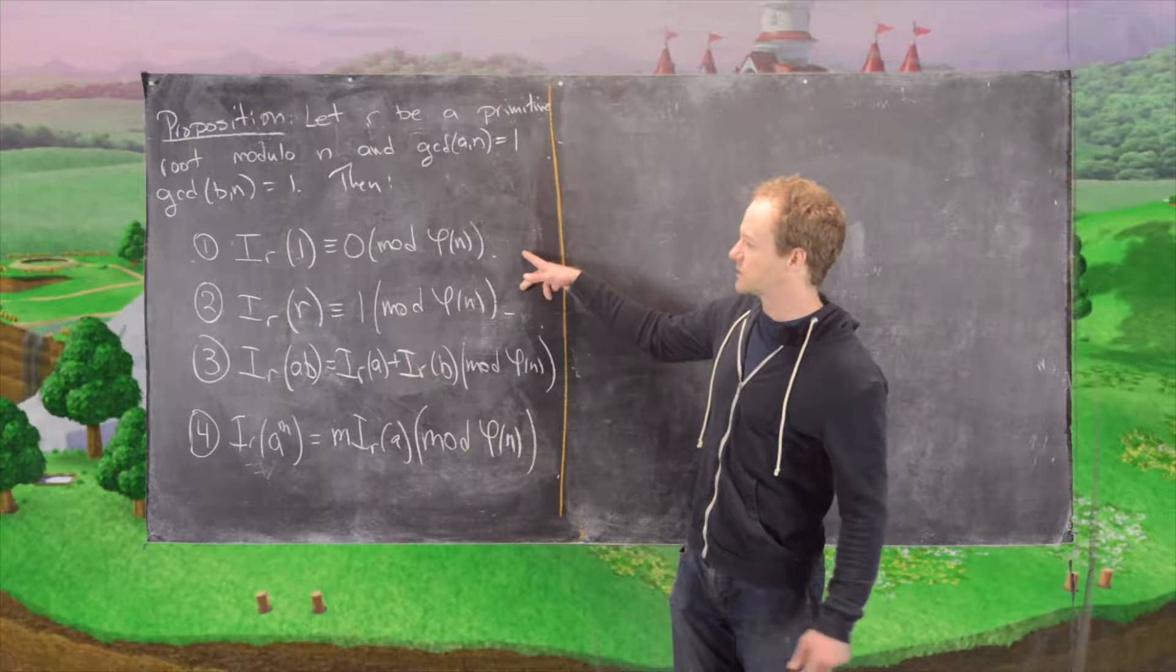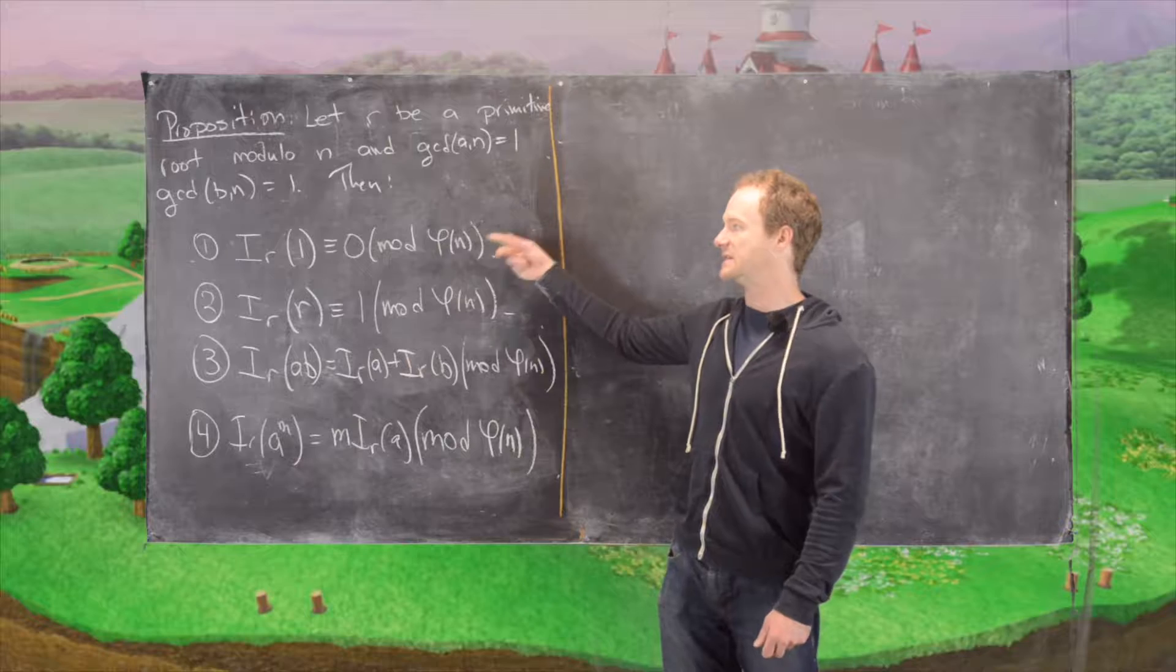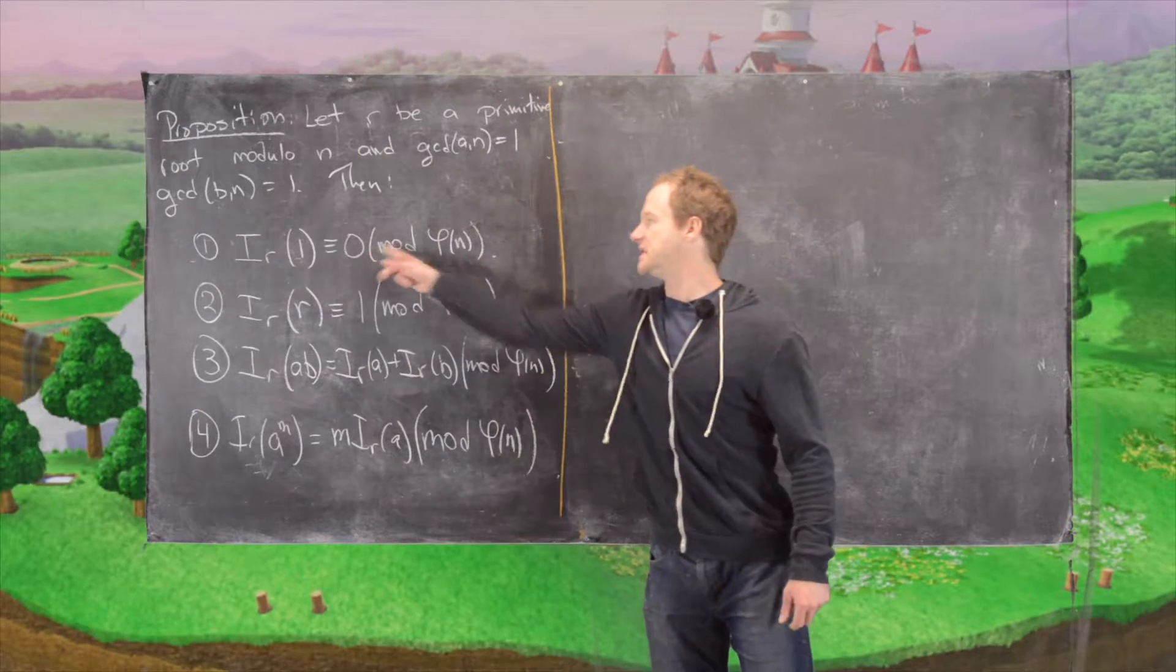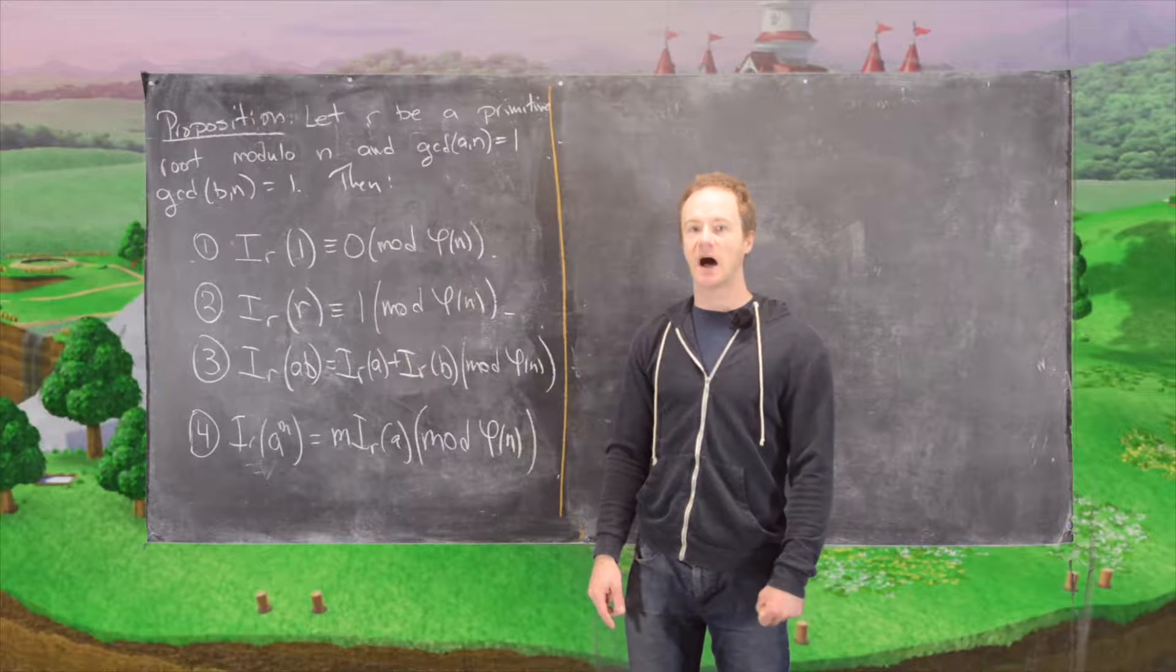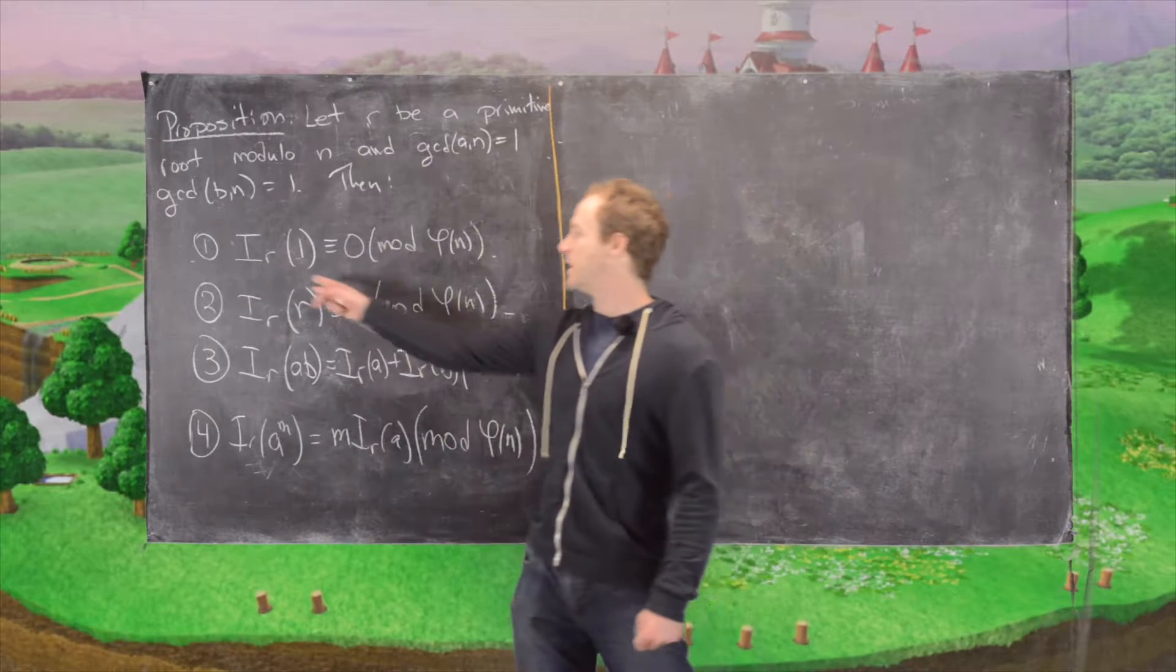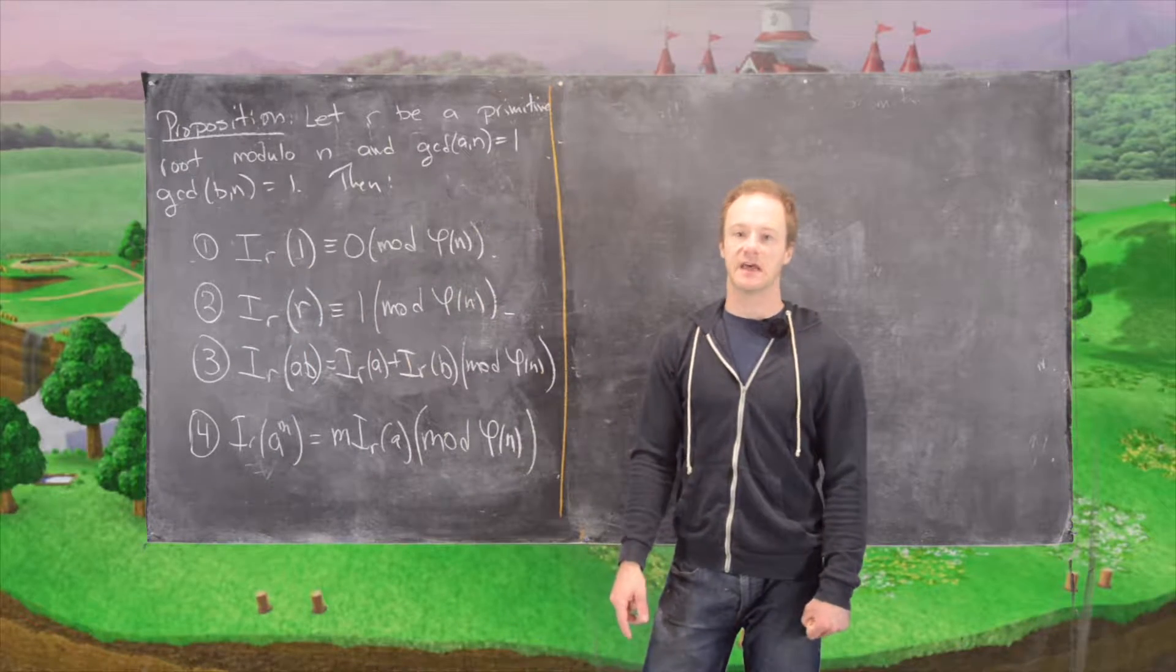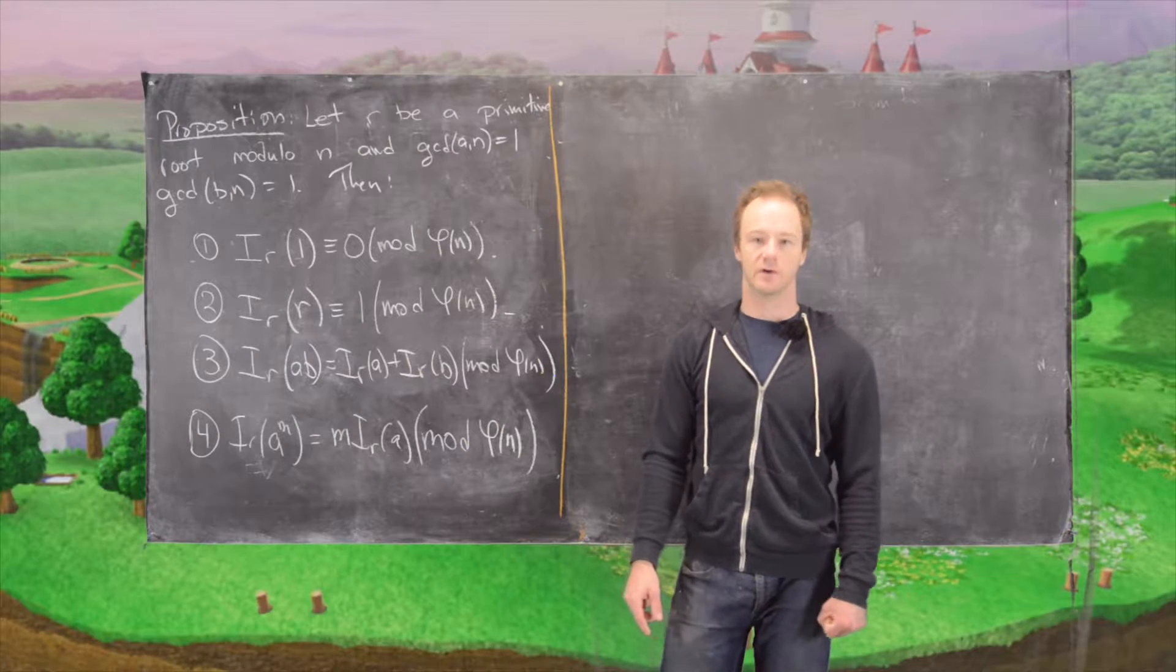We have these first two which are fairly trivial. The index of 1 with respect to r is 0 mod phi of n. Recall that the index is the smallest positive number such that r to that positive number is congruent to 1 mod n. But the smallest such positive number will be phi of n, given the definition of the primitive root, which makes this congruent to 0 mod phi of n.